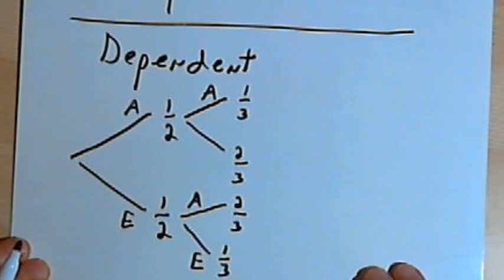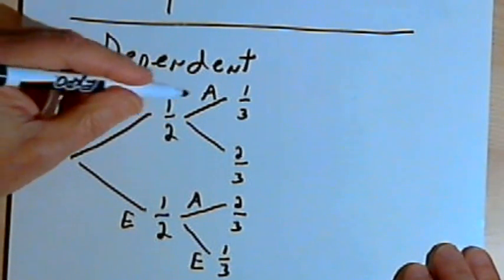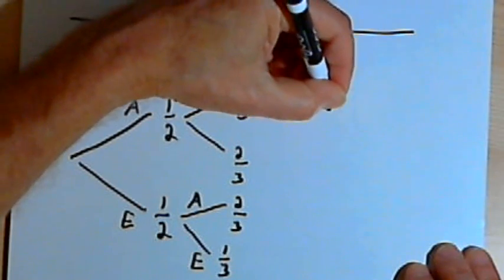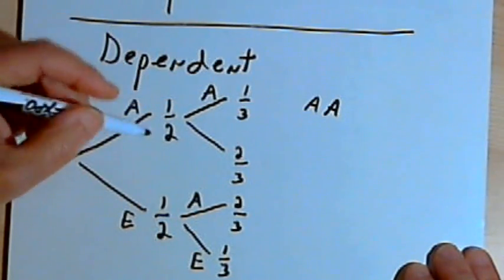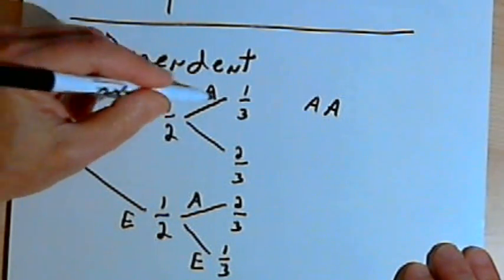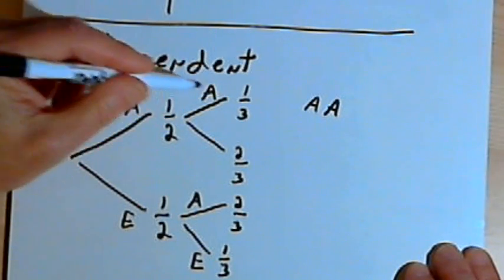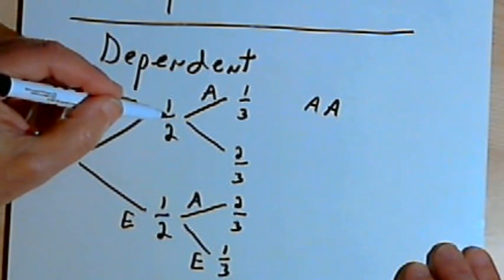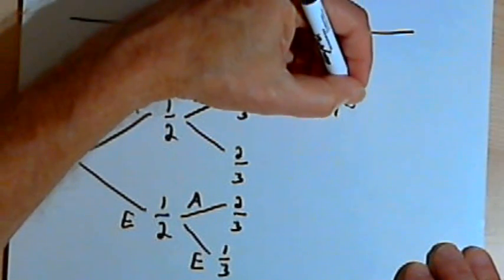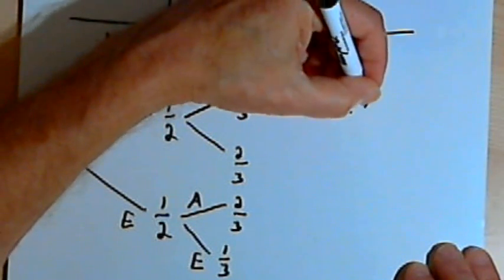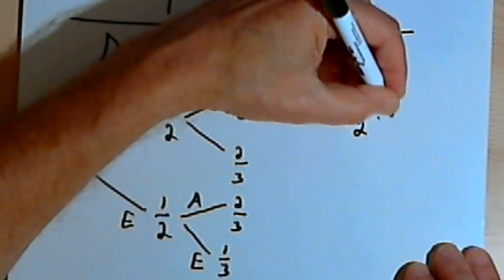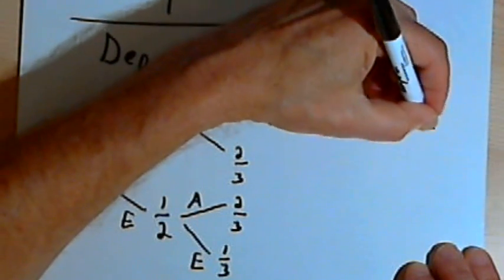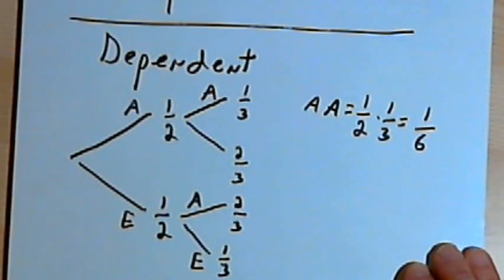If I want to know the probability of getting two A's in a row, I'll figure that out the same way as before. I'll take the branch of the tree that has two A's in a row and multiply one-half — the probability from the first time — times one-third — the probability from the second time. One-half times one-third is one-sixth, one over six.